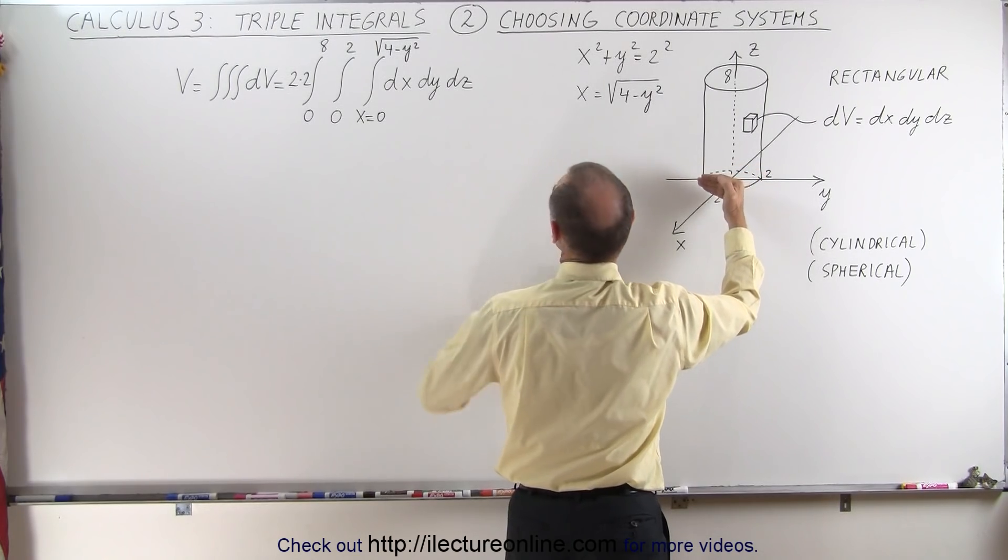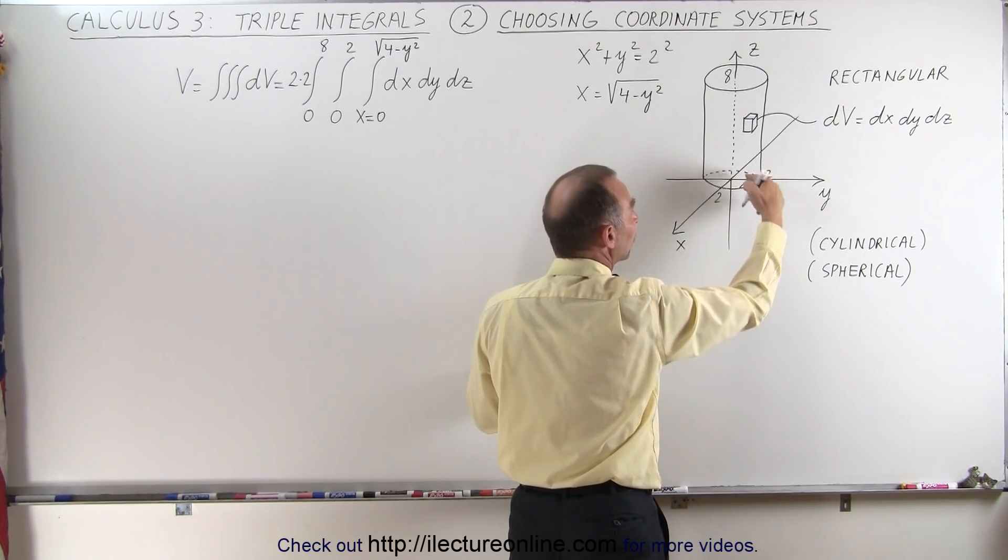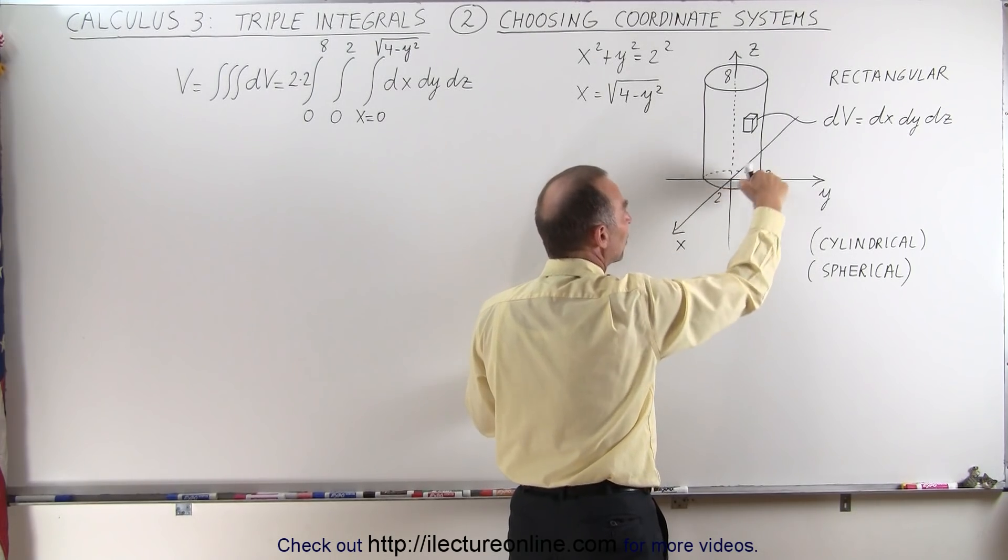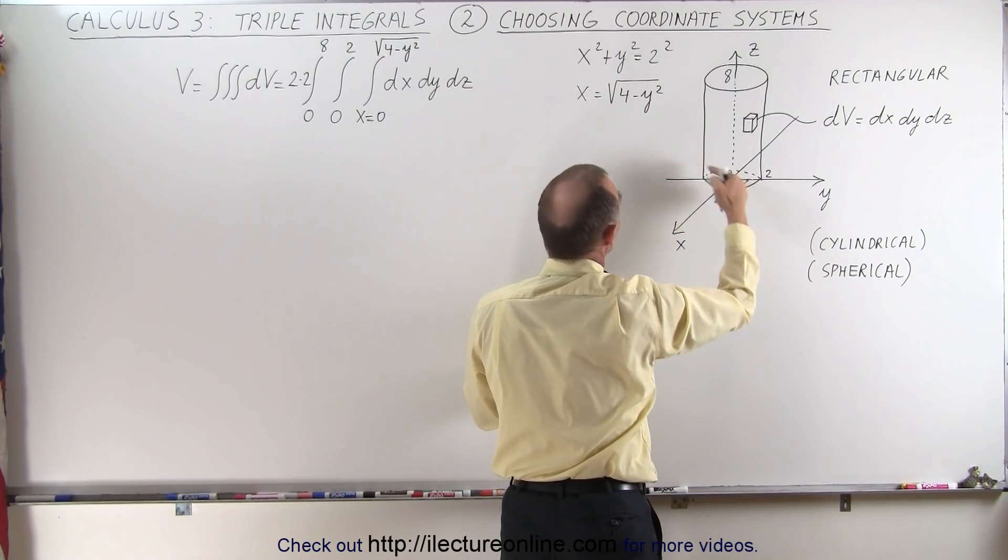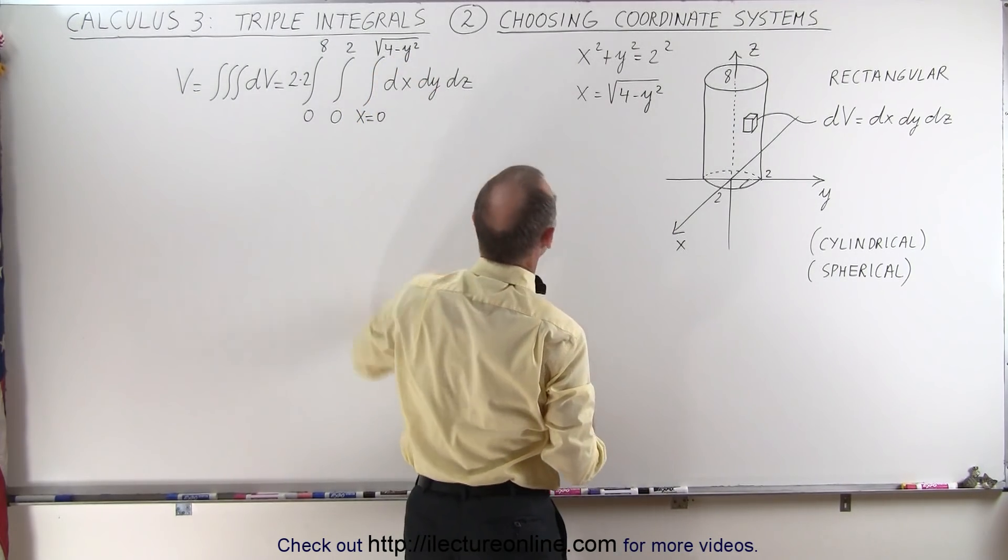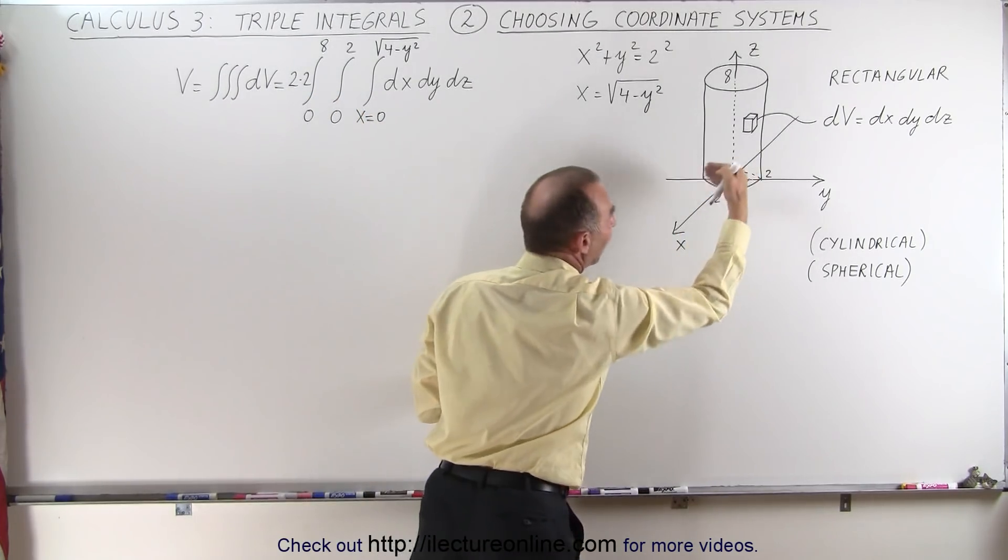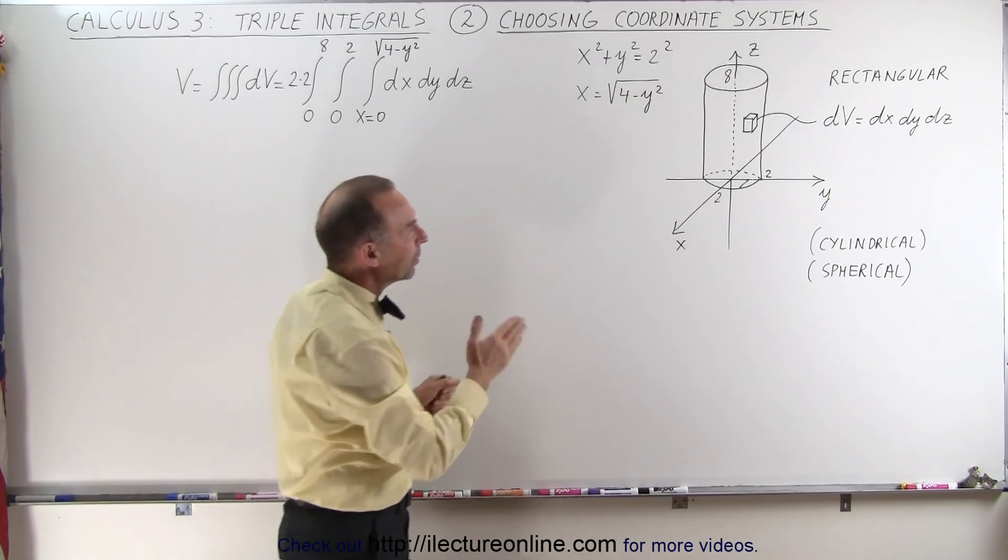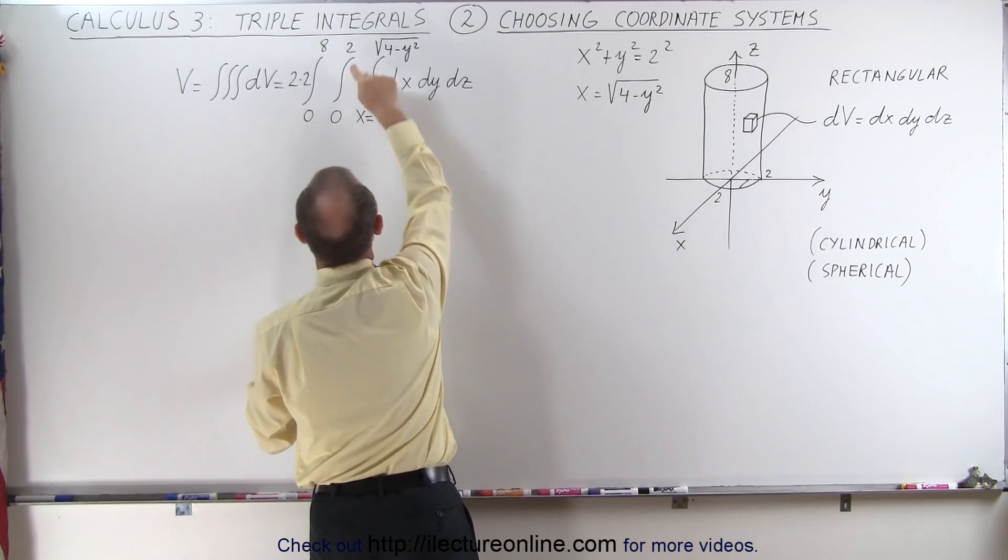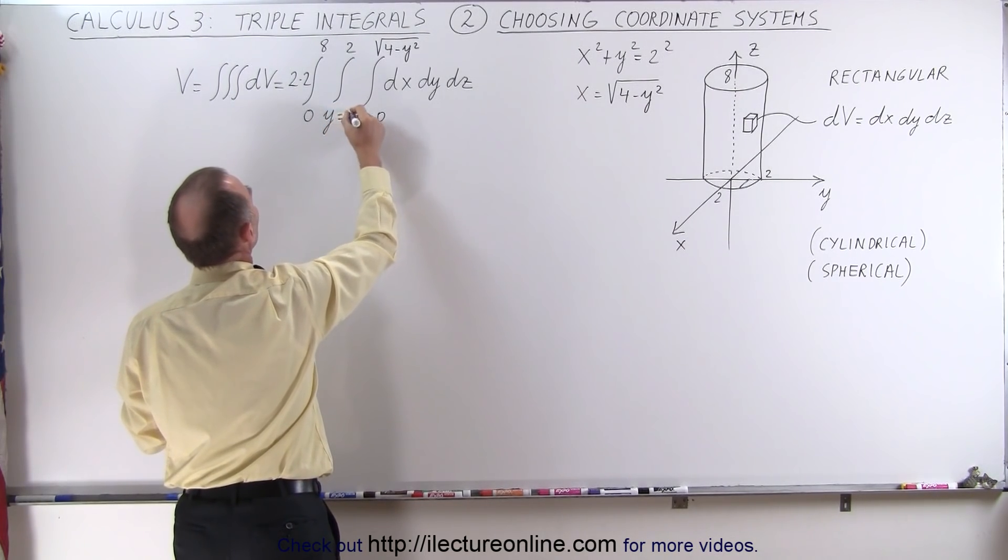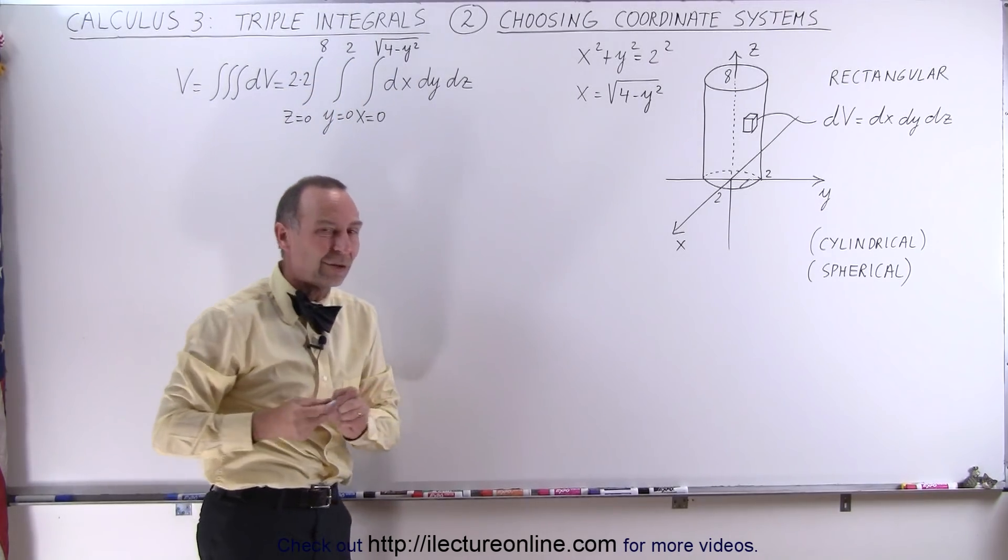We're going to integrate in the x direction first from 0 to 2, or actually not from 0 to 2, because I'm hitting the boundary here. So I'm limited by the equation x² + y² = 2². So I need to integrate from 0 to the edge, which is the square root of 4 minus y². But if I'm going to integrate from 0 to there, then I have to multiply times 2, because I only did half of it in the x direction. Then I'm going to integrate in the y direction. The y goes from minus 2 to 2, but I chose the limit from 0 to 2 for y. So I need to multiply times 2 again, because I only went half the distance.